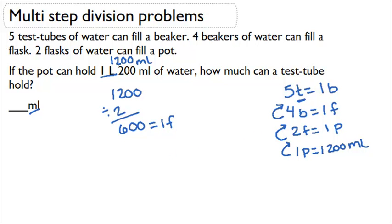Now to go from flask to beaker, since there are four beakers in one flask, I'm going to have to divide by four. So if I divide my 600 by four now, I'm going to get 150 milliliters in one beaker.